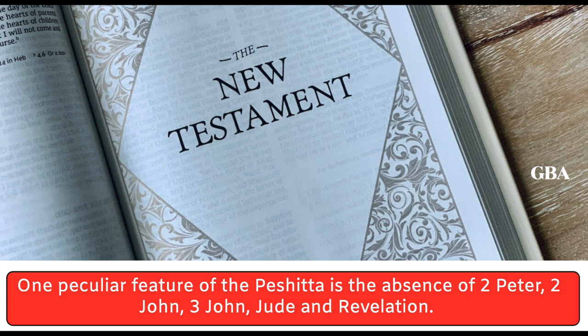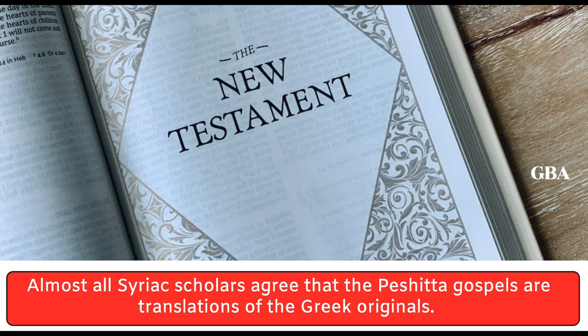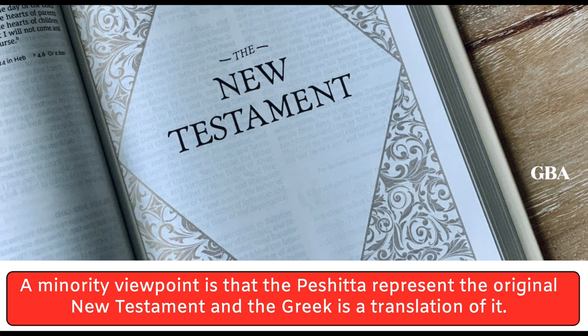Modern Syriac Bibles add 6th or 7th century translations of these five books to a revised Peshitta text. Almost all Syriac scholars agree that the Peshitta Gospels are translations of the Greek originals. A minority viewpoint is that the Peshitta represents the original New Testament and the Greek is a translation of it.